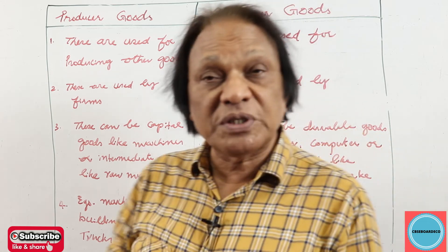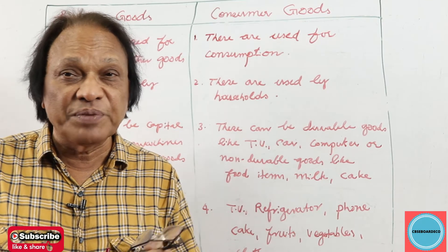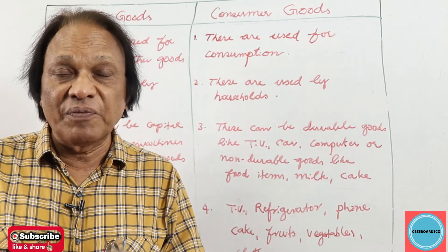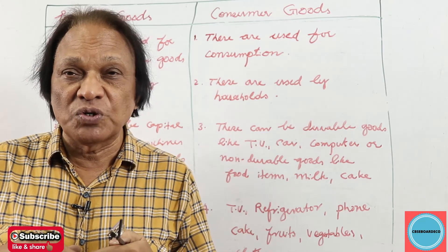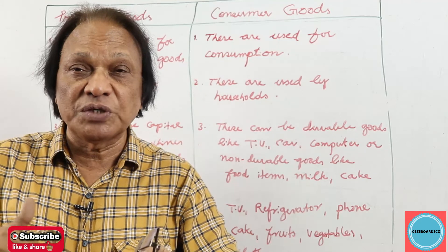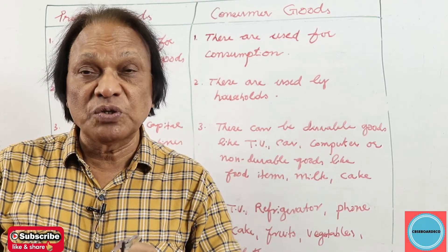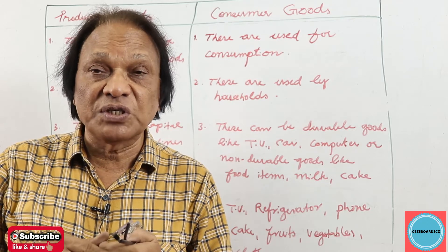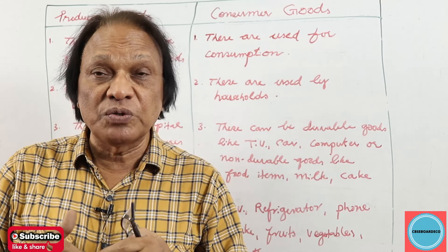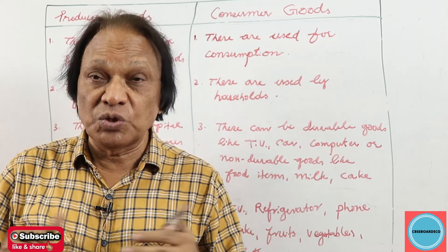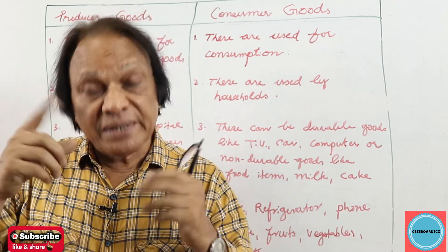I am 100% sure you must have followed it. Differentiate between producer and consumer goods. Just remember: producer goods are used by firms, consumer goods are used by households. Producer goods are for producing other goods, consumer goods are for consumption purposes. They can ask you a simple question — is it a producer or consumer good? Just think how you are using it: at home, or your dad is using it for his firm.